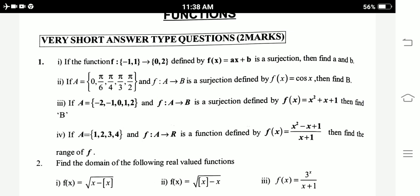If A = {-2, -1, 0, 1, 2}, f: A → B is a surjection defined by f(x) = x² + x + 1, then find B.